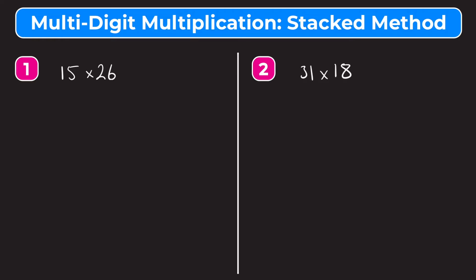Let's try number one. We have 15 times 26. The first thing to remember when using the stacked method is always write your larger number first. You'll see as we go further on why putting your larger number on top will make it easier in the long run. So we're going to write 26 on top, times 15. Always remember to line up your places — the 6 and the 5 are both in the ones place, so they go right on top of each other, and the 2 and the 1 are in the tens place, so they also go right on top of each other.